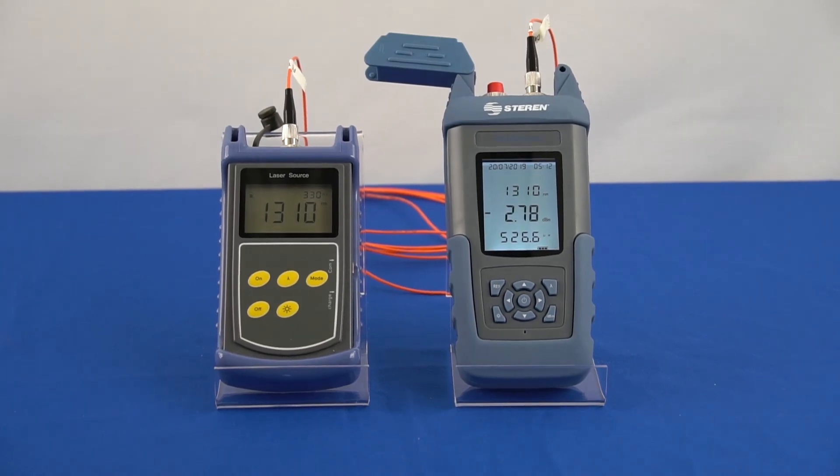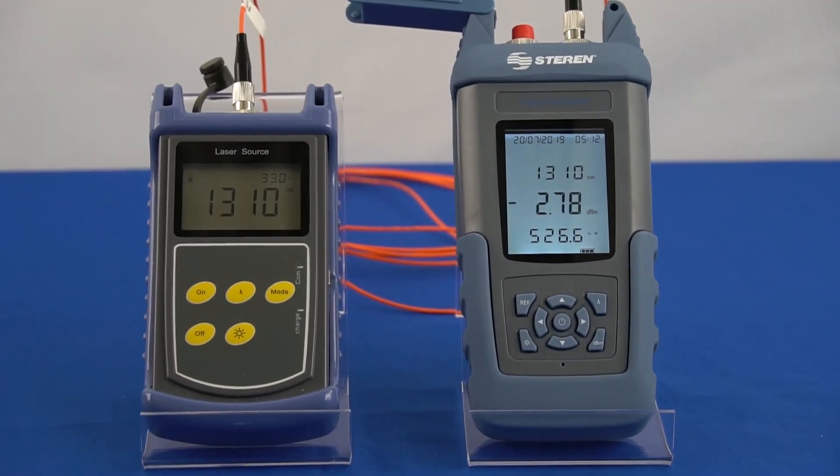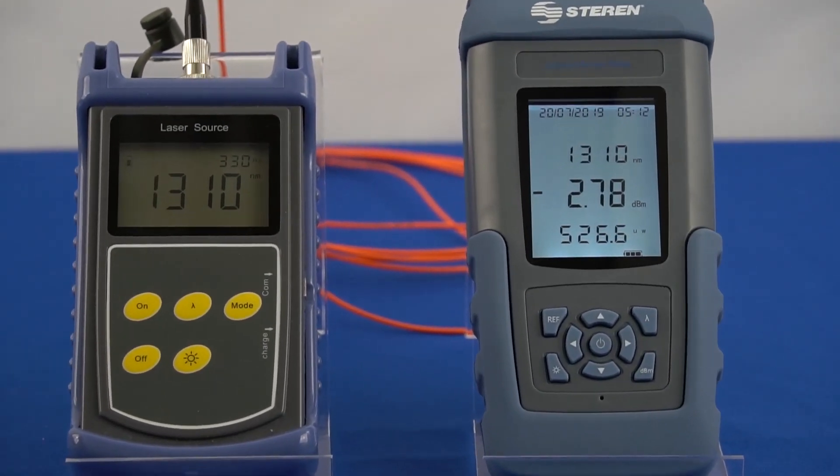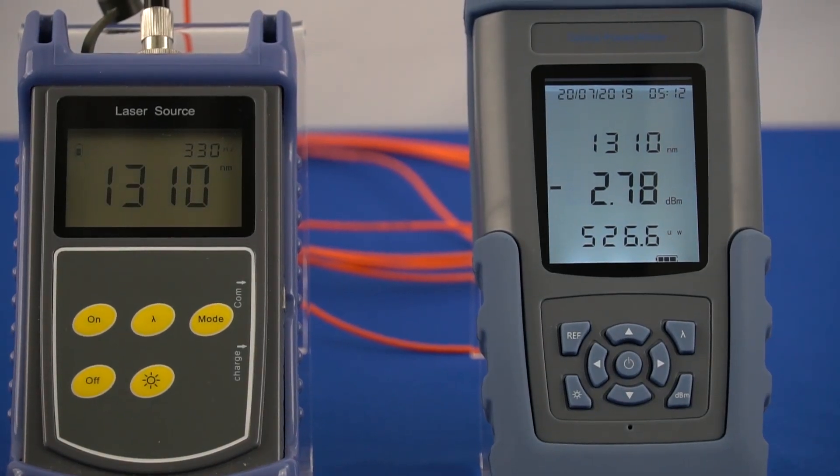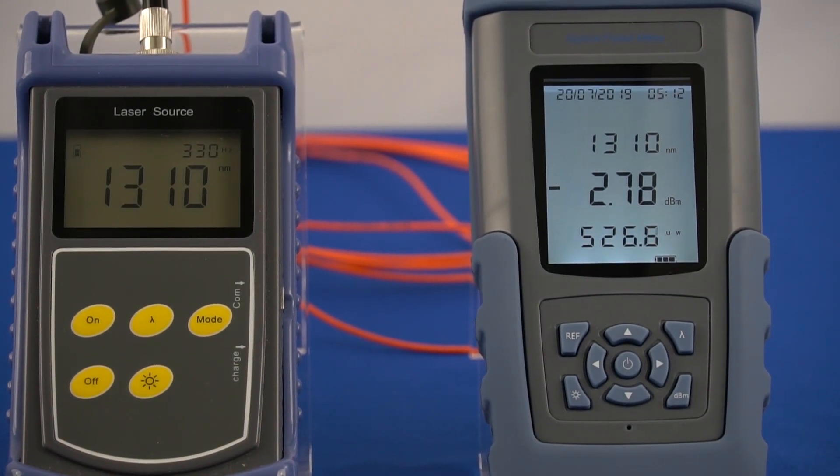The optical power meter unit also has a test tones detection feature. This will inform the user if the source is outputting 270Hz, 1kHz, 2kHz, or 330Hz test tones.